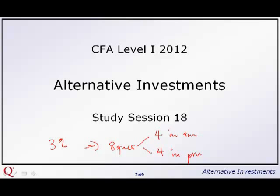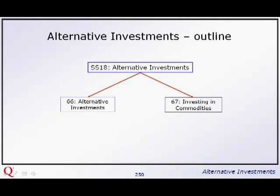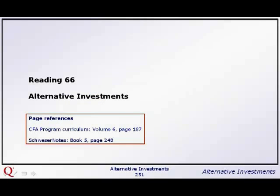There are some calculations. They are quite easy to work out but could also very easily go wrong, so you need to know exactly what it is that you need to be doing. We've only got one study session here, which breaks up into two readings. First one, reading 66, alternative investments — we're looking at the 8 types of alternatives mentioned in the curriculum. And then with reading 67, we'll look at commodities in a bit more detail. So we'll make a start on reading 66.